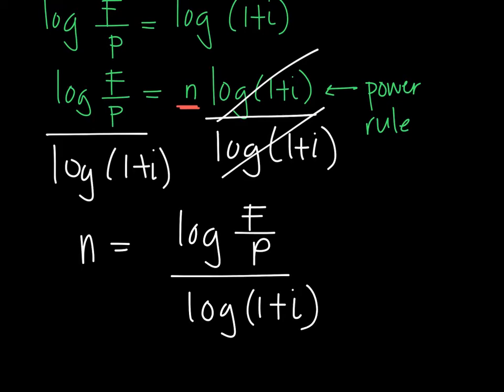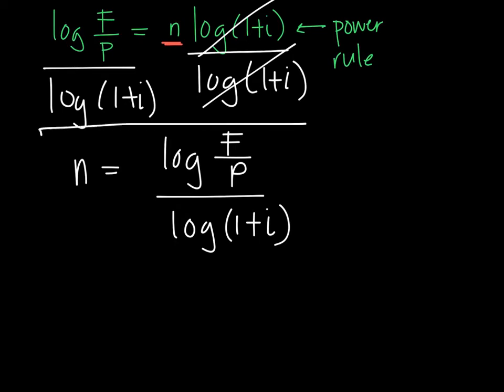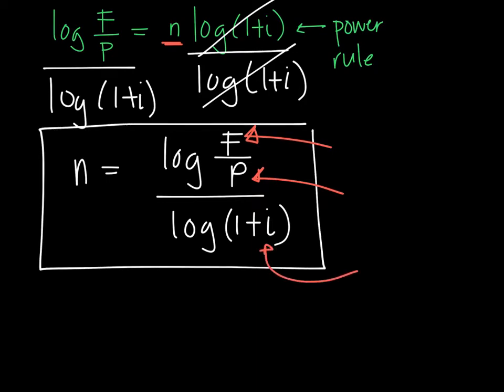So, this formula is something that you can use immediately when you are looking for the number of periods if you're given the future value, the present value. And this I here is given. This is the interest based on how many times it is compounded.